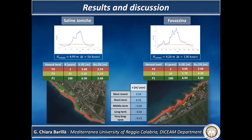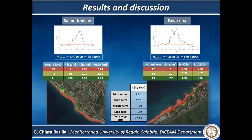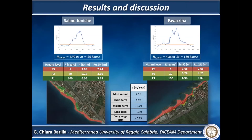The second phase of the methodology was applied only to the location of Favazzina, whose beach was destroyed by the sea storm. These results were obtained in terms of shoreline variation rate for different time intervals, as the table shows.